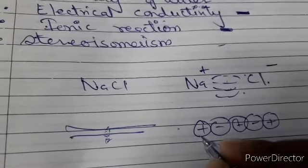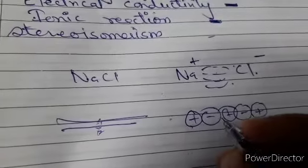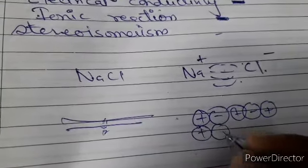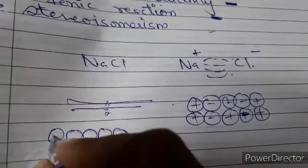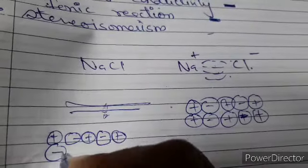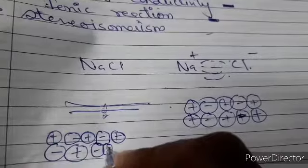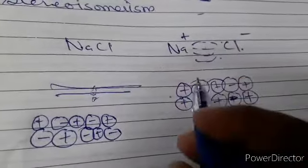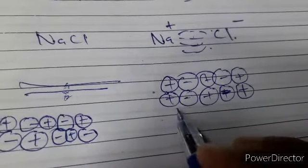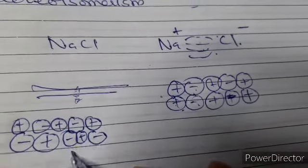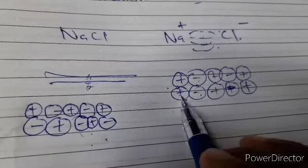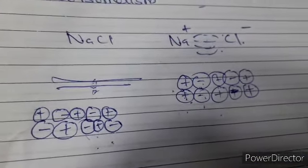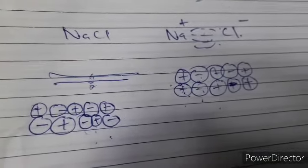To illustrate: in the normal arrangement, ions are arranged as plus-minus-plus-minus. When a force is applied, the layers shift so that positive ions align next to positive and negative next to negative. This causes the layers to repel each other due to the electrostatic force, leading to cleavage of the crystal. That is why ionic compounds show brittleness.